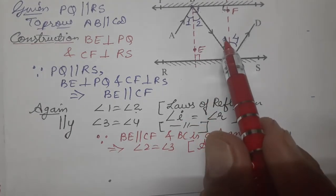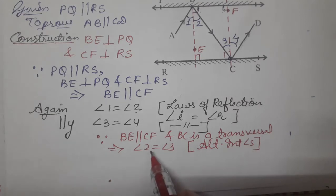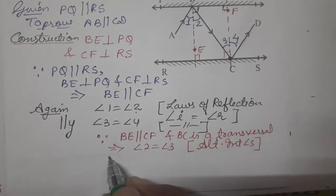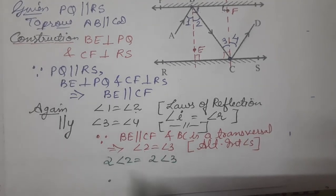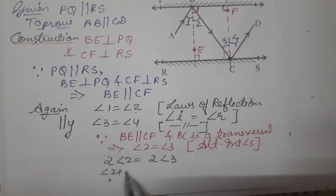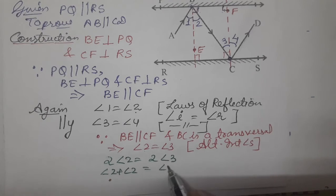So angle 2 equals angle 3. Now what we'll do: multiply both sides by 2. So 2 times angle 2 equals 2 times angle 3. Equals can be multiplied: 2 times means angle 2 plus angle 2 equals angle 3 plus angle 3.